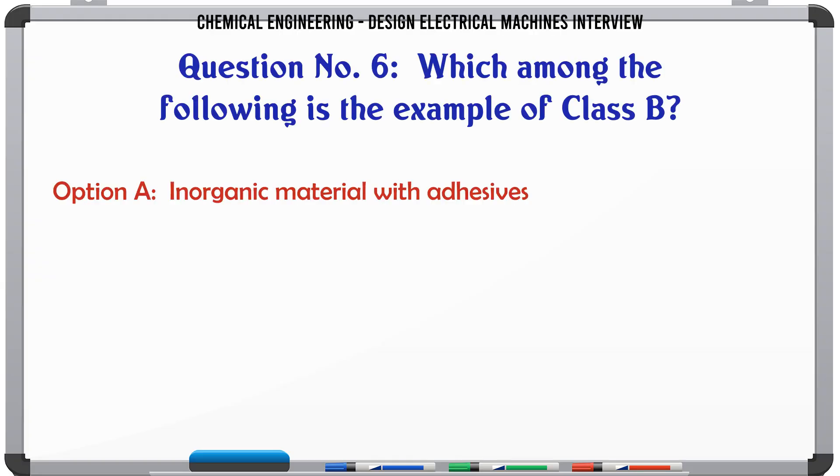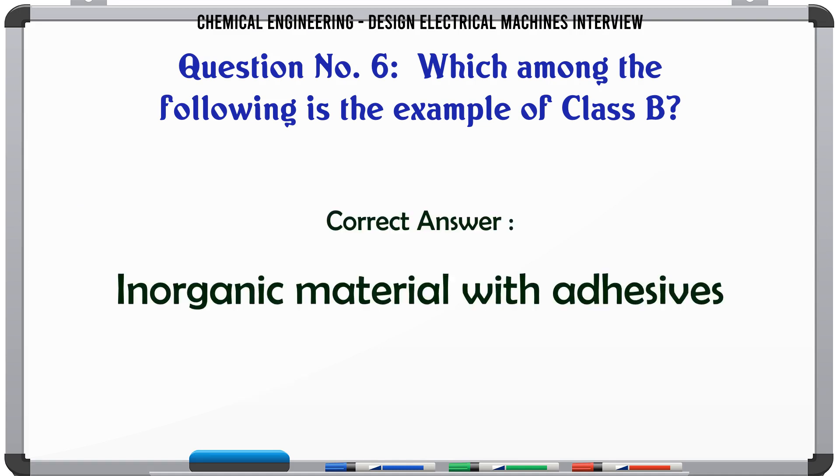Which among the following is the example of class B? A: inorganic material with adhesives, B: hard fiber, C: wood, D: impregnated oil. The correct answer is inorganic material with adhesives.